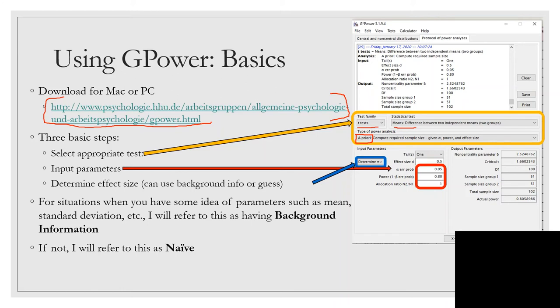Second step is input parameters. This is usually things like alpha values, power, and other specific information. Then you can determine your effect size by hitting determine and it'll pop up a box to enter data, or you can just guess the effect size directly.